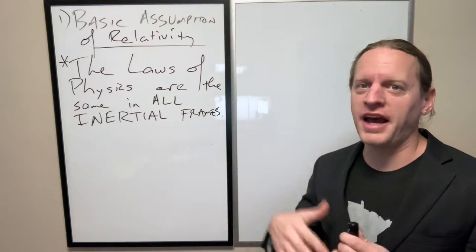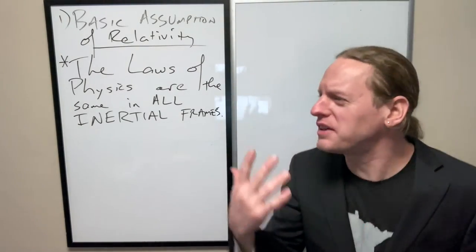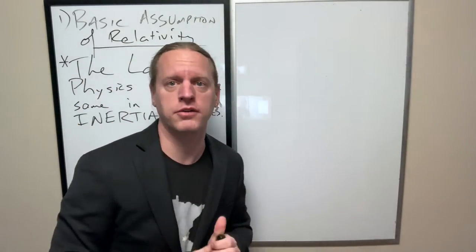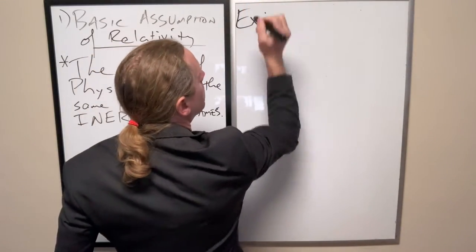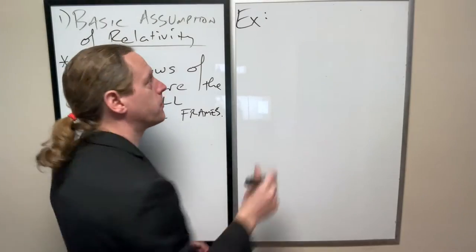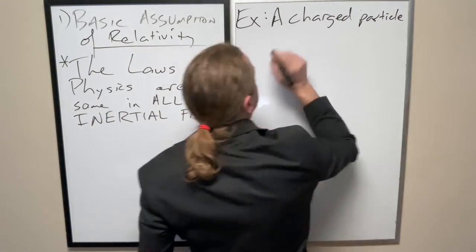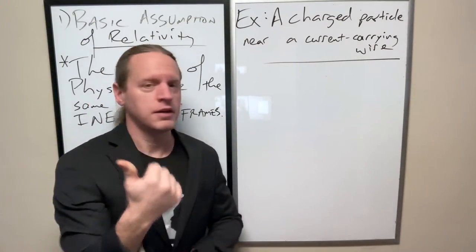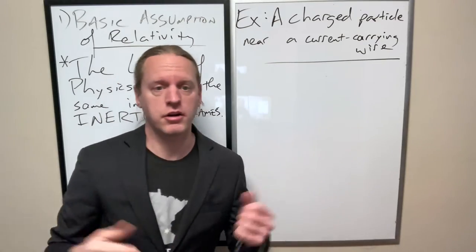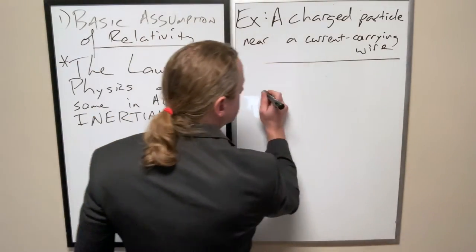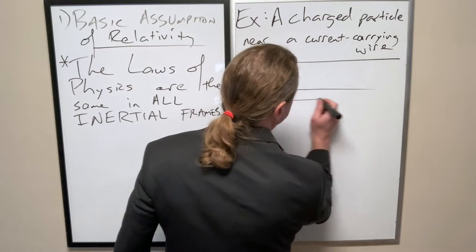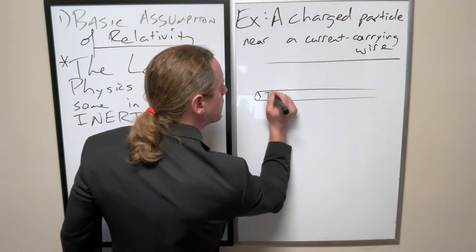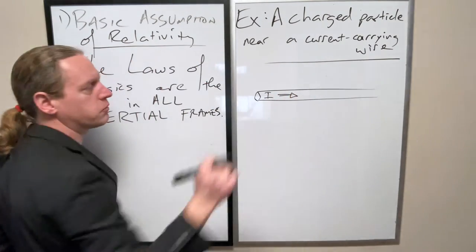One example of this that is kind of a weird thing to think about is the idea of the apparent magnetic force. So for example, a charged particle traveling through a magnetic field. We're looking at a charged particle nearby a wire that's carrying current. Let's say we have some wire, and for whatever reason, we're carrying current to the right. So the current is moving to the right.